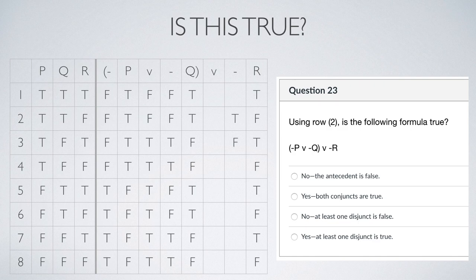Now we take care of the truth assignments for the negations. For a column that alternates completely, I copied the first two rows and pasted them repeatedly — it creates that nice alternating pattern quickly, and then you manually fill in the remaining rows. Looking at row two, at least one disjunct is true for the overall disjunction: specifically, the negation of r is true, even though the left-hand disjunct (the negations of p and q) is false. So the overall truth assignment is true.